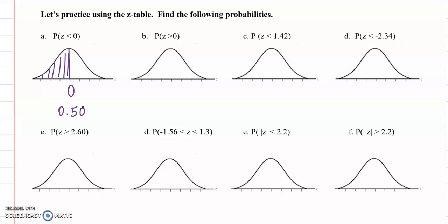Part B, the probability that z is bigger than zero should also be 50 percent or 0.5. The probability that z is less than 1.42. So here's your zero and 1.4 will be like here and we're talking this probability. So now we need to find that on our z-table.